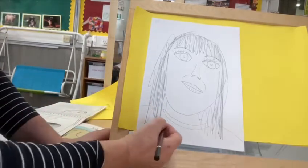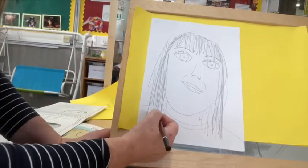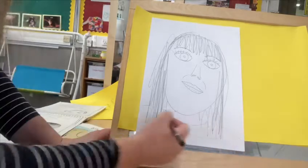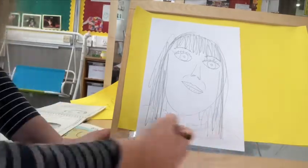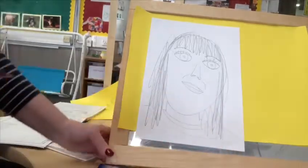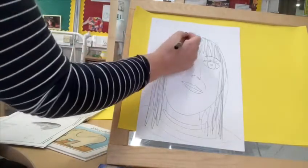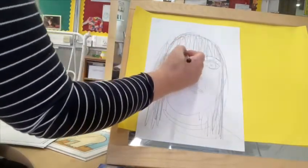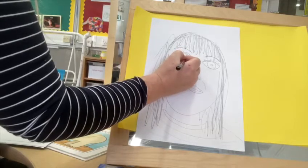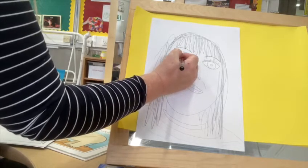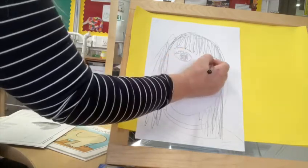And today I'm wearing a stripy t-shirt. When I look in the mirror, my eyes look quite dark, and I can see little lines in the eyelids, so I'm going to put them into my picture.